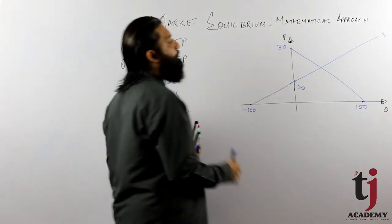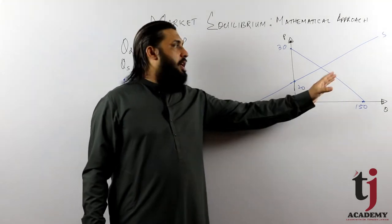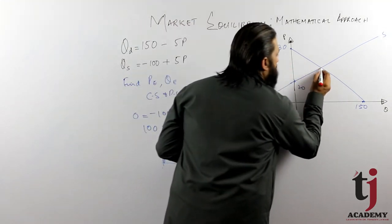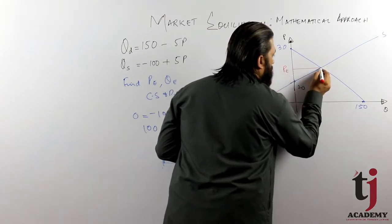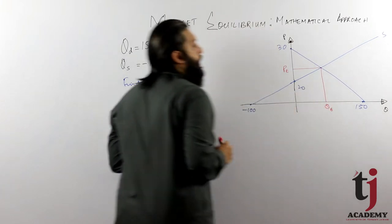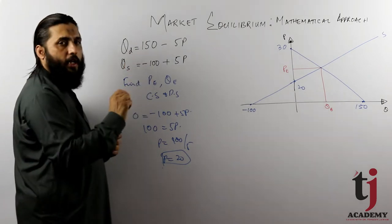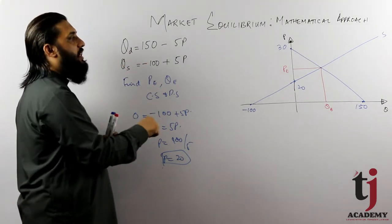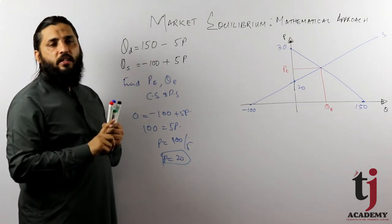Here, what is the price? You can find the price. You can also mark the scale. This is where the two curves come down and intersect — this point is where they meet.